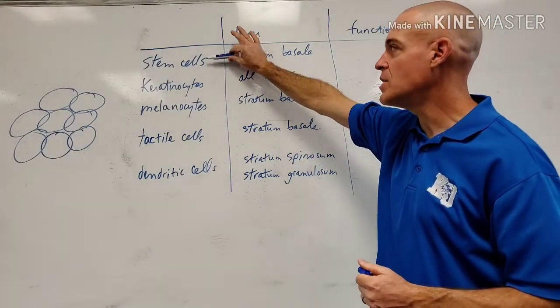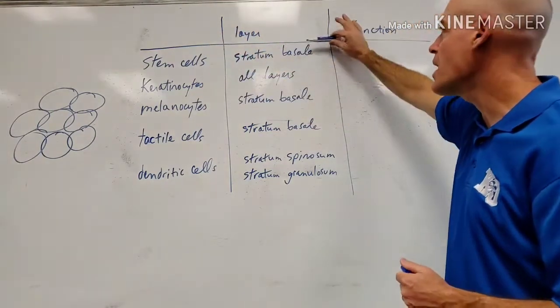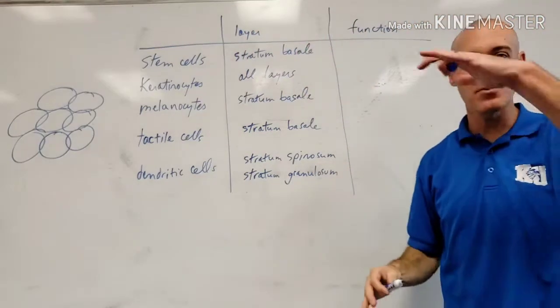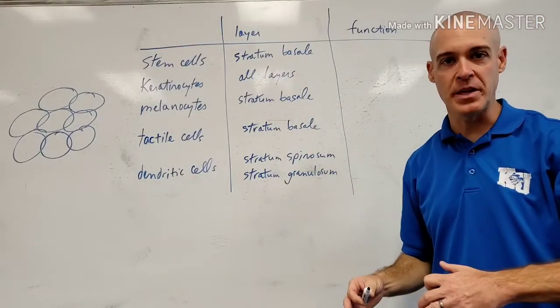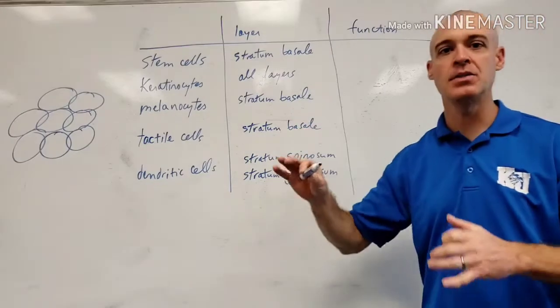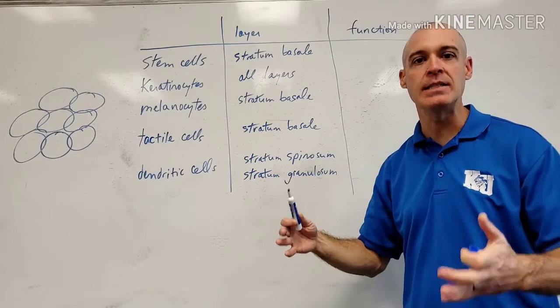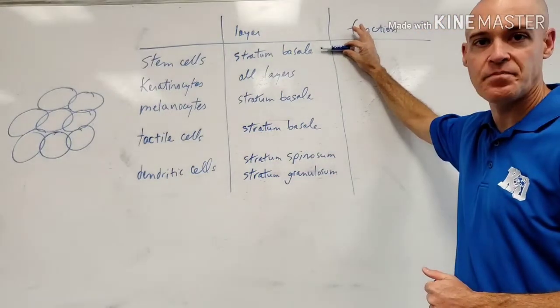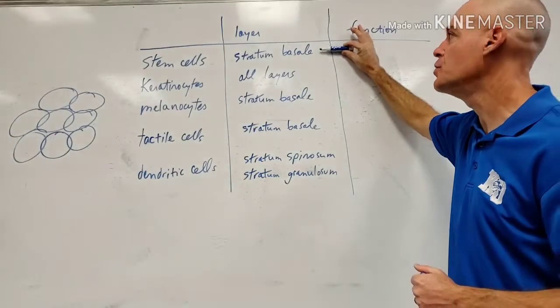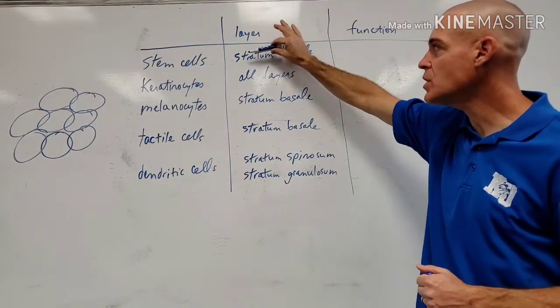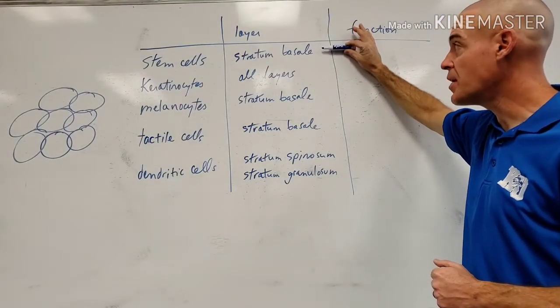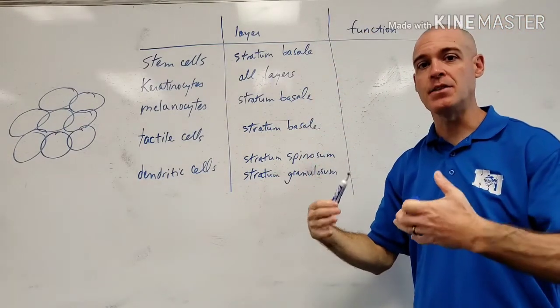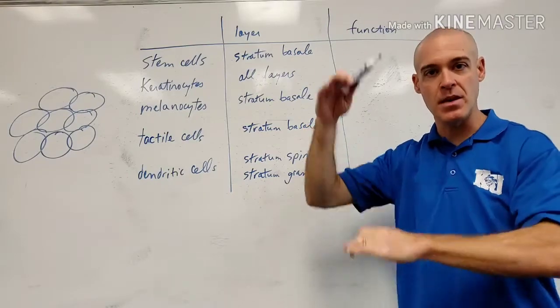The first cell type is stem cells. These are the names of the layers of the epidermis. The bottom layer contains most of these specialized cells. The bottom layer is the stratum basale. This layer is the deepest layer and it has a lot of mitosis occurring. It's the most active layer of the epidermis.